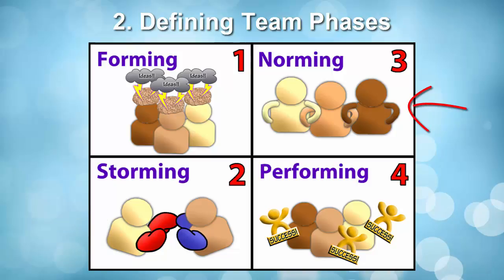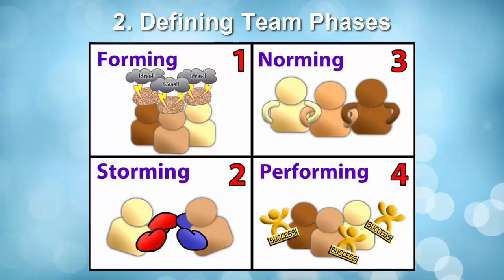Norming occurs when members begin to listen to each other and resolve conflicts. Performing is the phase when groups work together and achieve project goals. Adjourning is the final stage of team formation when members prepare to leave the group and break up relationship bonds that were nurtured during the project. For more information on team phases, please read the associated article in your readings for this lesson.